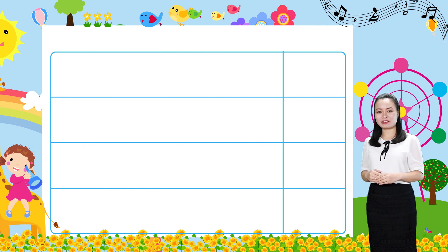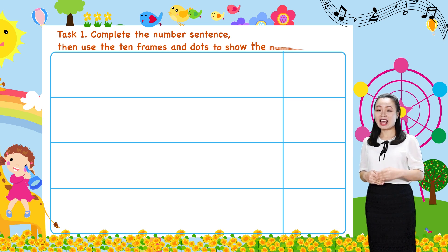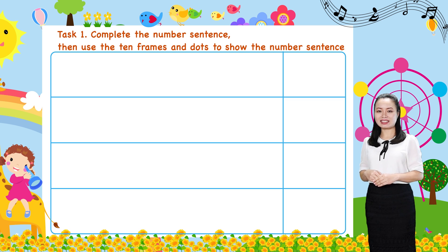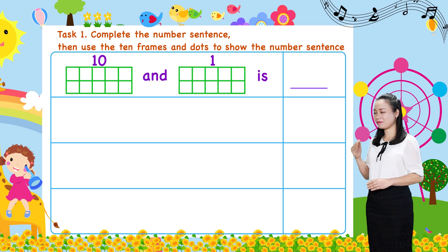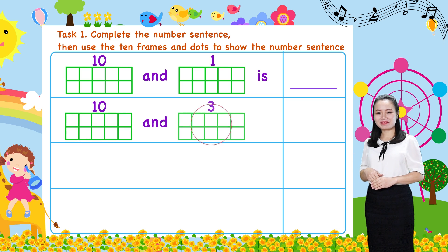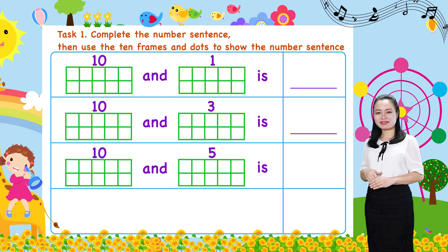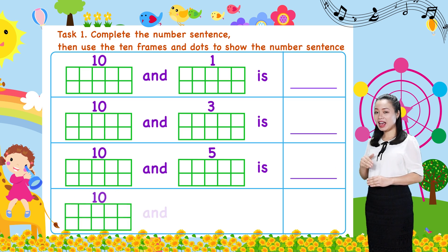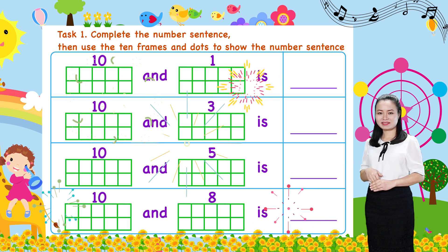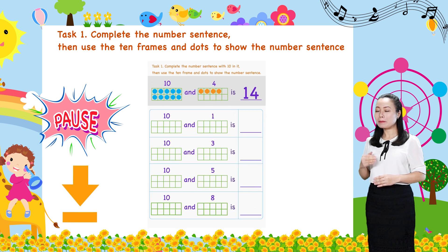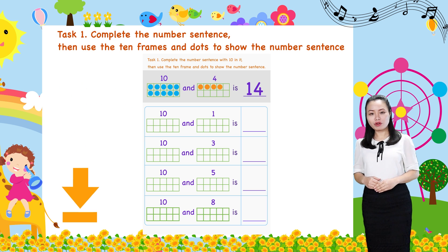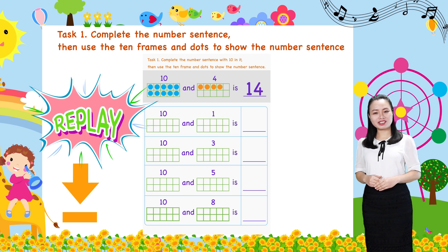Now let's have some practice. Task 1: complete the number sentence, then use the 10-frames and dots to show the number sentence. 10 and 1 is __, 10 and 3 is __, 10 and 5 is __, 10 and 8 is __. To do this task, pause this video, download and print the worksheet below, then try to do it on your own. When you finish, replay the video to check the answers with me.